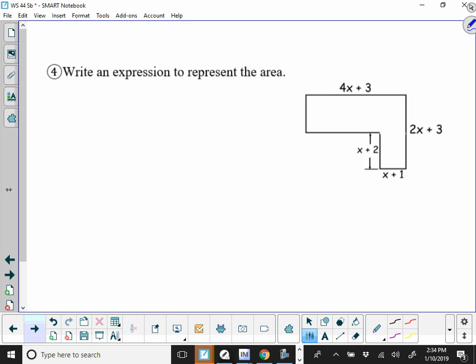Okay, number four. This is total area again, so this is where we have to break it apart. If we do x plus 1 times x plus 2, which is going to give us x squared plus 3x plus 2.